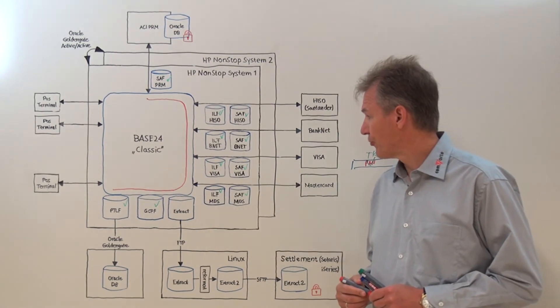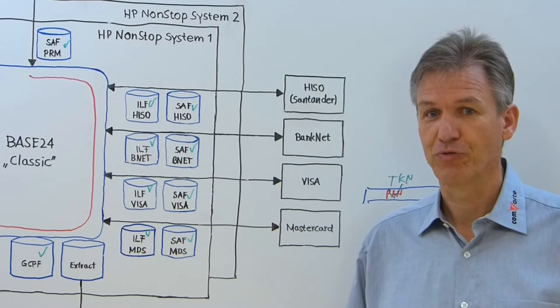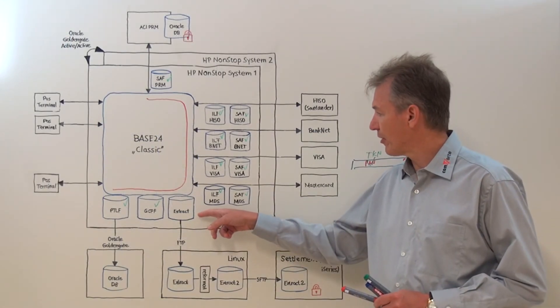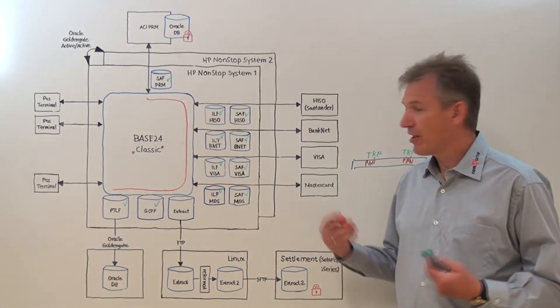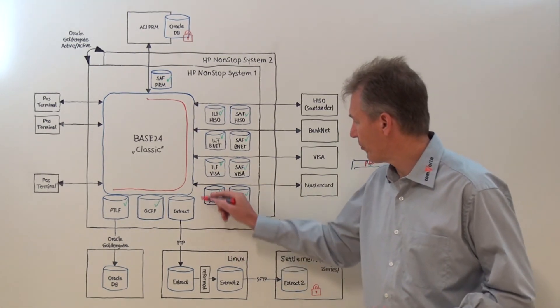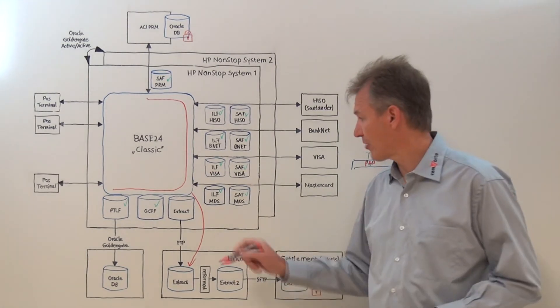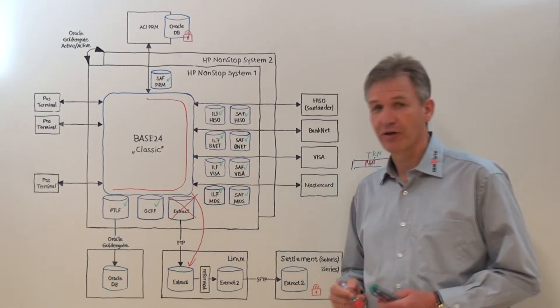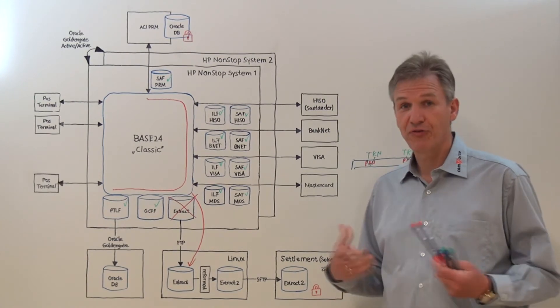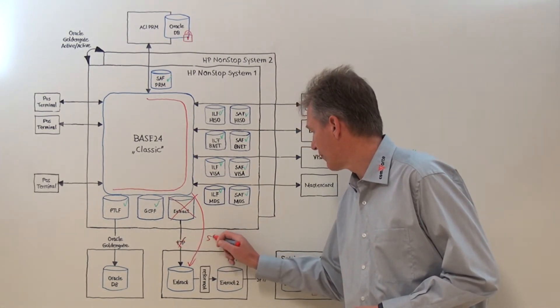We still have one sensitive file set not covered yet, the extract files. While we could protect these with the same mechanisms as well, SecureData provides a much better solution for that. It's actually eliminating the temporary storage on the non-stop just for subsequent transfer completely by making BASE24 transfer the file directly to the remote system. Using that mechanism, we can eliminate the extract file that is stored on the non-stop completely and store it directly on the target server. And of course, SecureData provides secure mechanisms for doing that transfer. We don't use FTP, we use SSH protected transfer.